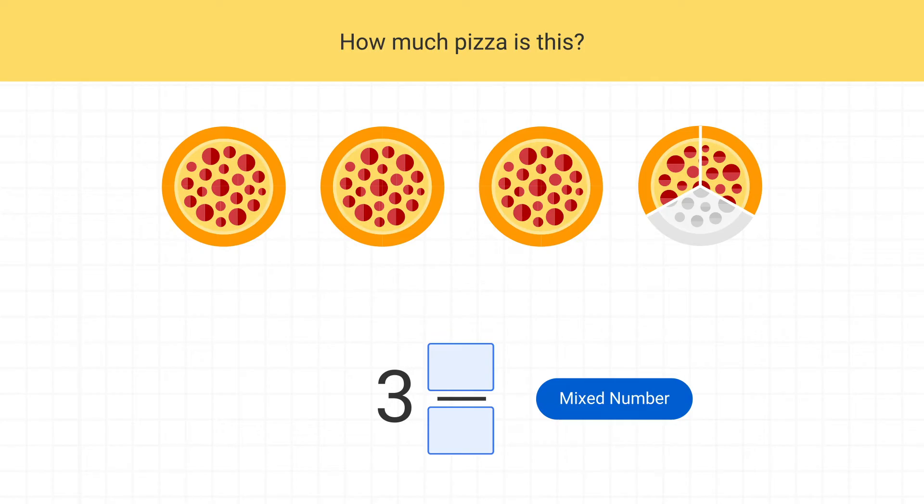Next, what fraction of the pizza is this? Each piece is one-third of the pizza. So this is two-thirds of the pizza. I can write that into my mixed number and I have my final answer. This is three and two-thirds of a pizza.